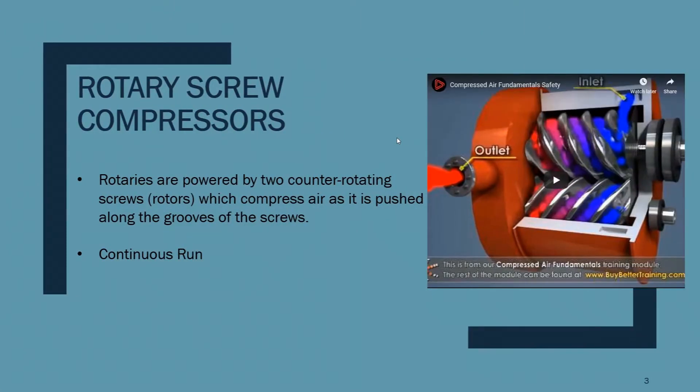Starting with rotary screw compressors — how they actually work and compress the air. They are powered by two counter-rotating screws, or rotors, which compress the air as it is pushed along the grooves of those screws.